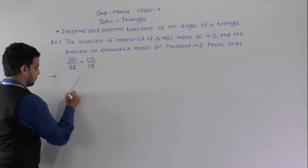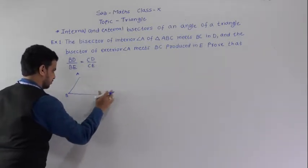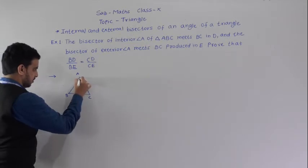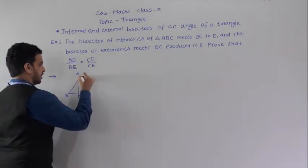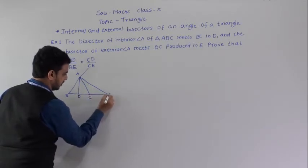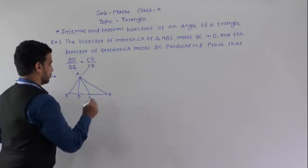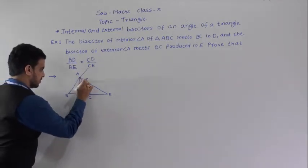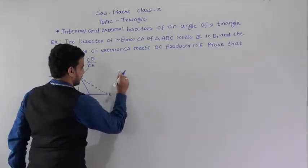First we draw a diagram. Here triangle ABC is drawn. AD is the interior bisector of angle A, and if we extend BA, the exterior bisector meets BC produced at E. So AE is the exterior bisector and AD is the interior bisector of angle A. AE is represented as a dotted line.